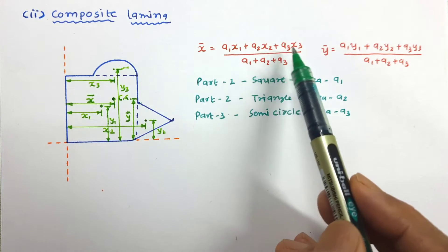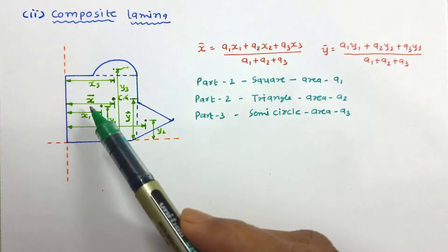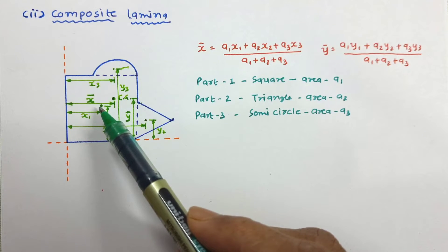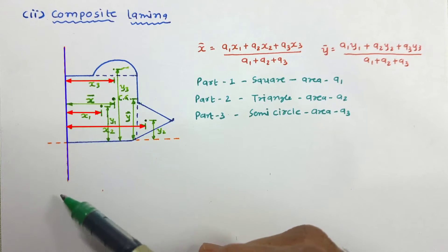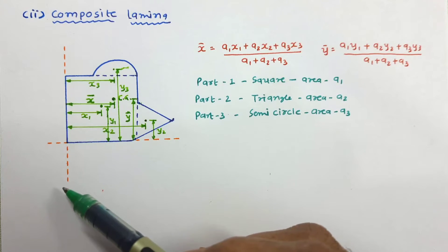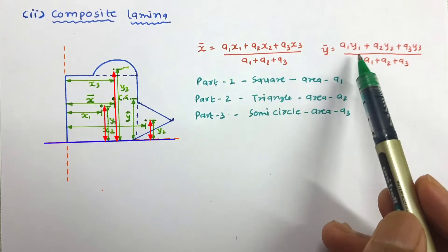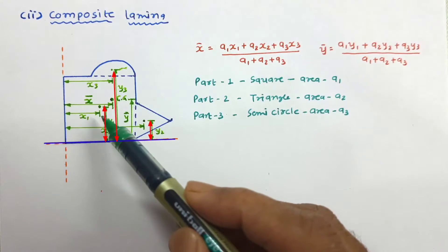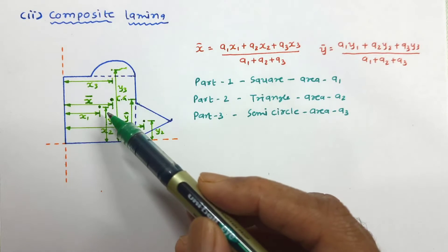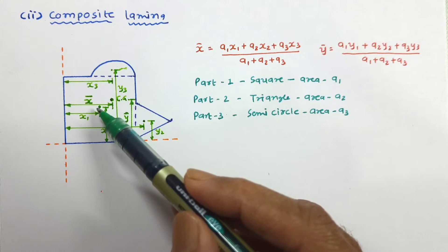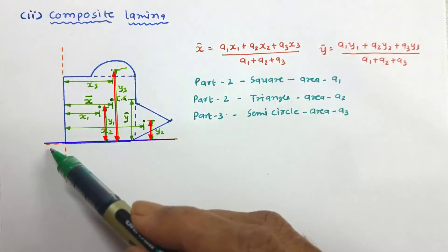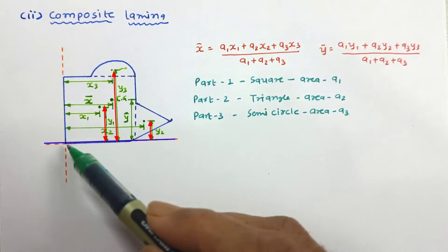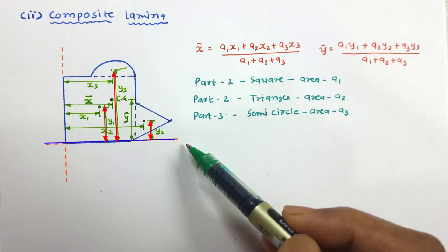Here X₁, X₂, X₃ are the distances of the centroid of parts 1, 2, and 3 from the vertical reference axis. Y₁, Y₂, Y₃ are the centroidal distances of parts 1, 2, and 3 from the horizontal reference axis.